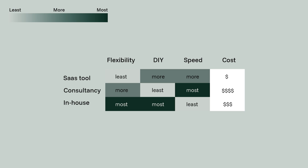Third is speed of delivery. This is the time it takes to get from 'I want to do MMM' to 'that's a useful MMM output that I can actually utilize.' Before I dive into measuring each method, I'll just run through the methods themselves so we're clear on what I mean with each categorization.